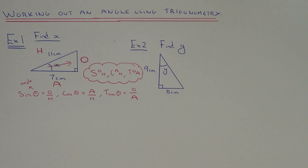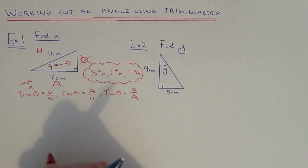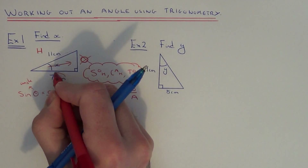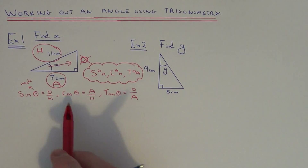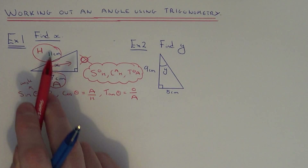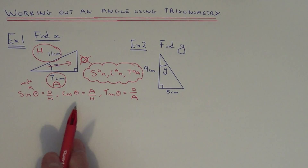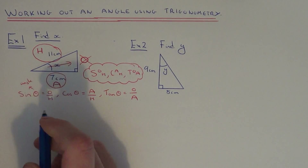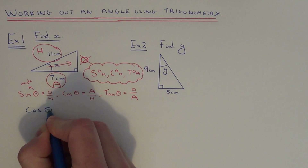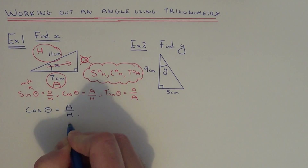Let's decide which of the three trig formulas to use. It's nothing to do with the opposite side — I've got the adjacent side and the hypotenuse side, so my formula needs A and H. Looking at the three formulas, the one that involves A and H is cos. So we copy down: cos θ equals adjacent divided by hypotenuse.